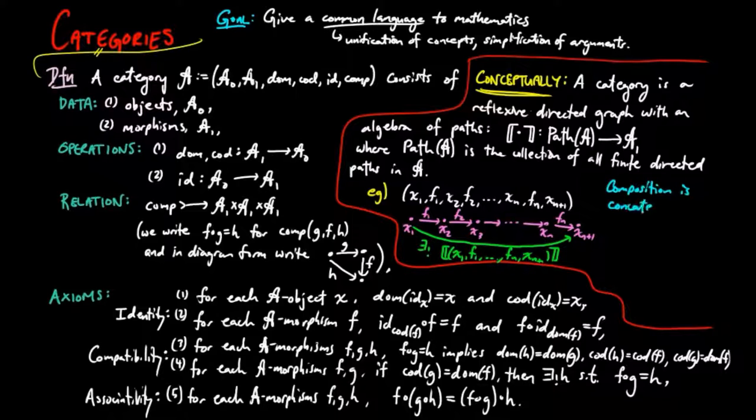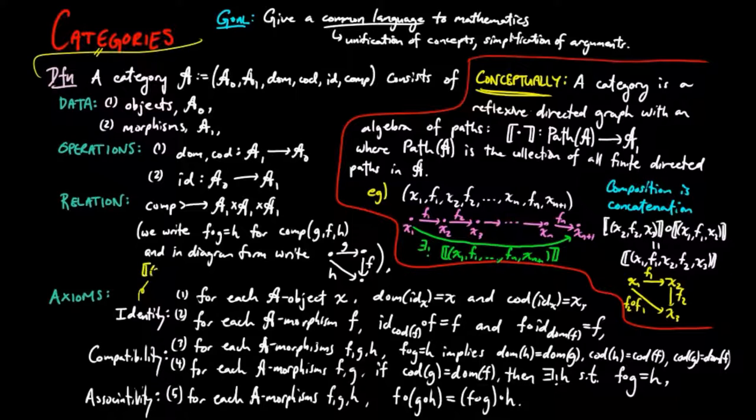Then we see that composition is defined by concatenating the paths. So the composition of F1 and F2 is the arrow associated to the path of length 2 that they span. Then we see that the identity morphisms come from the arrows associated to the paths of length 0, consisting of just a vertex.